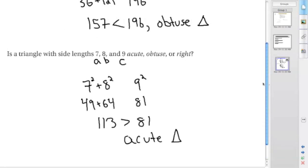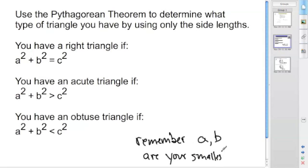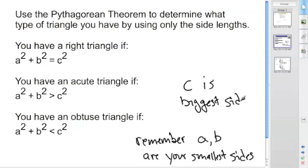That concludes this lesson on using the Pythagorean theorem to determine acute, right, or obtuse triangles. Remember: a and b are your smallest sides, and c is your biggest side. If you have any questions, please send me an email or come after school.